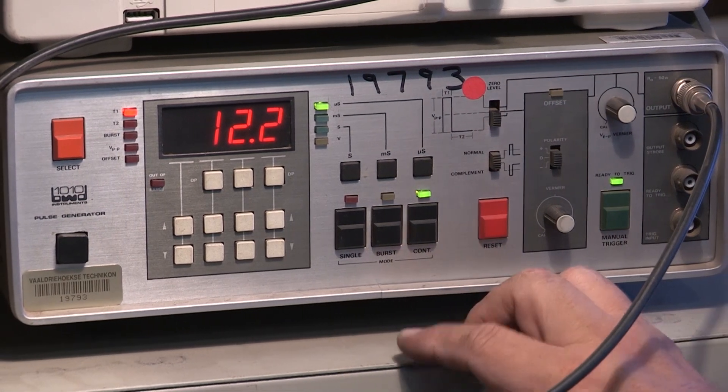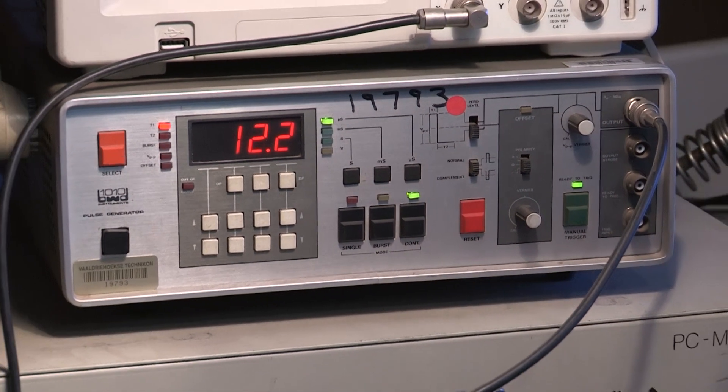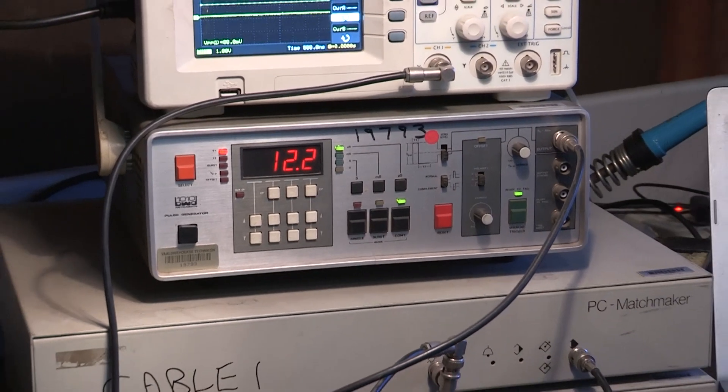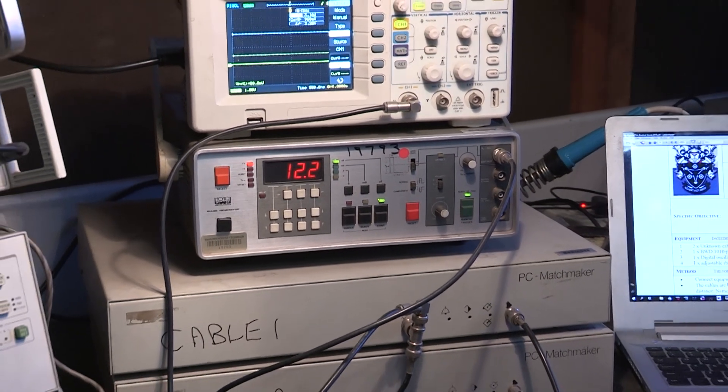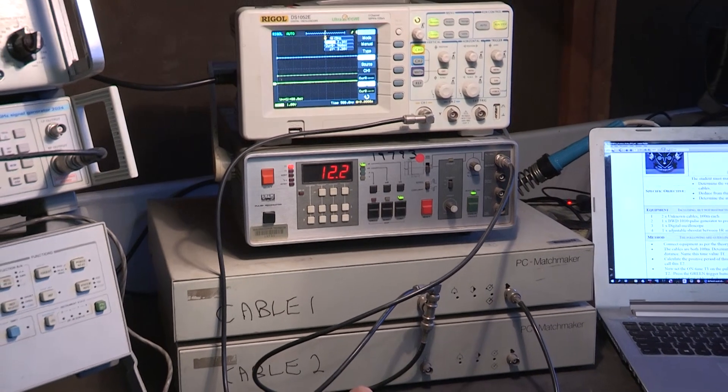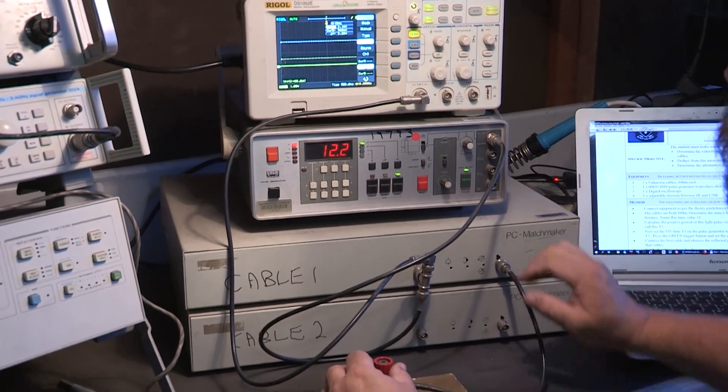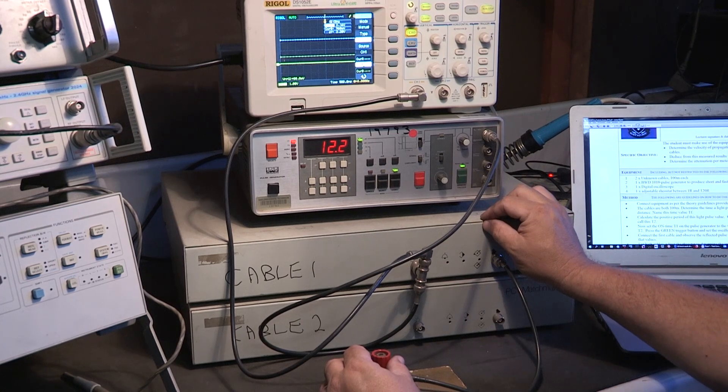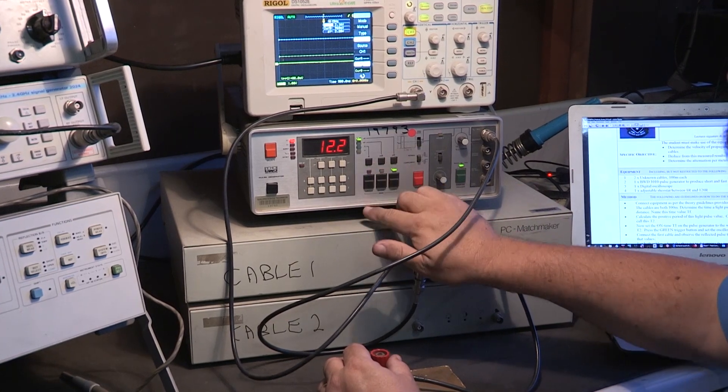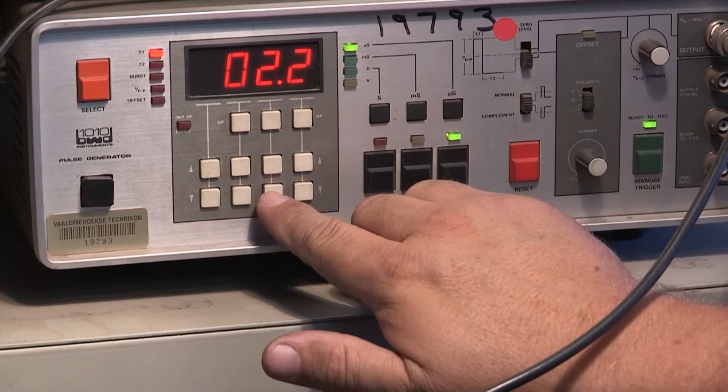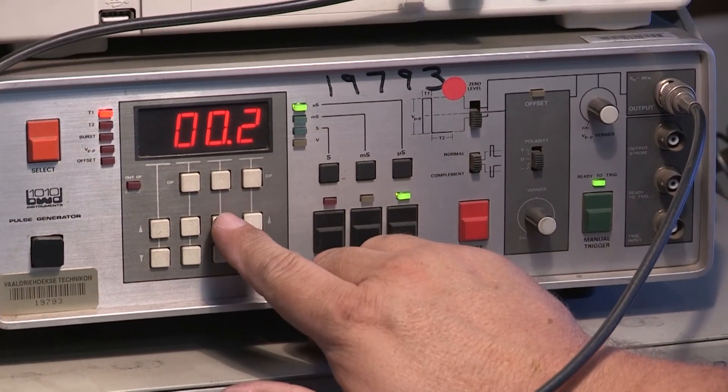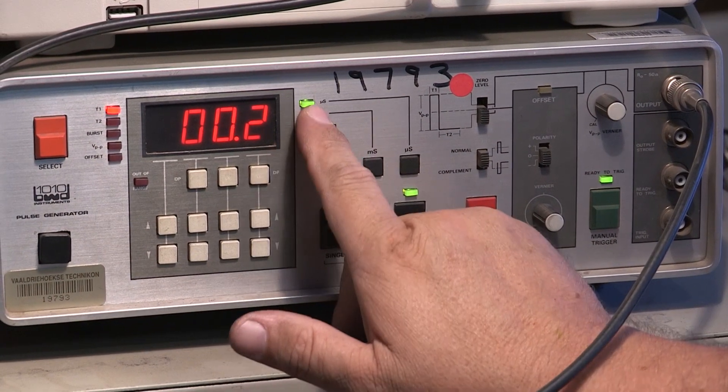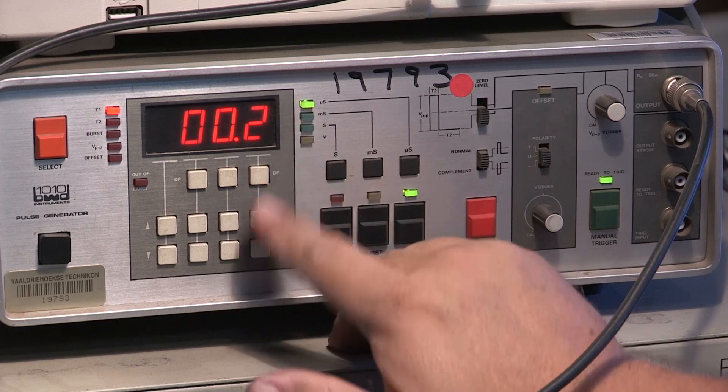If you read the experiment, they would like us to generate a pulse of which the on time is at least 20 times less than the off time. So T1 must be very fast, T2 should be not so fast. So T1 to adjust, I can adjust here, I make the on time 0.2 microseconds, that's quite fast.